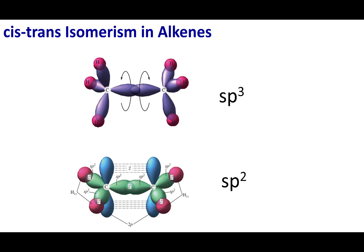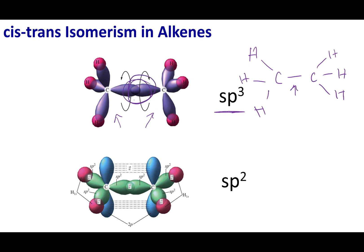What you guys will recall, when I talked about alkanes, I said that they were sp3 hybridized. Here are my sp3 orbitals. If I were to draw this structure out, what you have is a single bond between the two carbons — just an overlap of two sp3 orbitals. This means the molecule can rotate around that single bond.